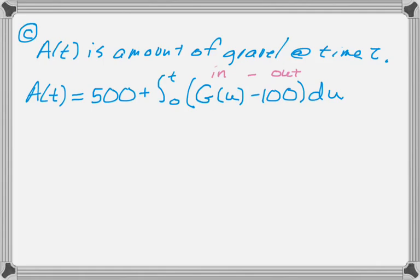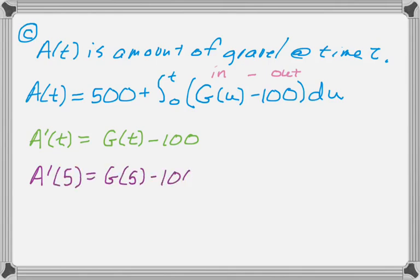So, as soon as I write that, I'm going to differentiate it and find A prime of T is just G of T minus 100 by the second fundamental theorem. So, A prime of 5 is G of 5 minus 100.